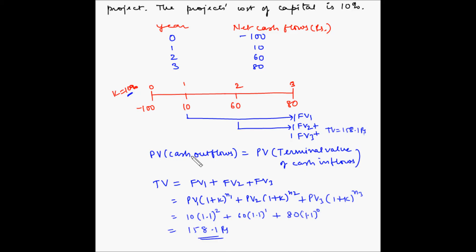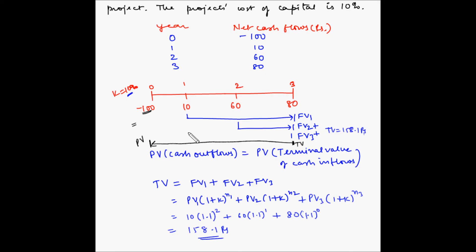We know the present value of cash outflows — there is only one cash outflow and its value is already at present value. We also know the terminal value of the cash inflows, which is 158.1. This terminal value has to be brought to its present value, and this present value of cash outflows will equal the present value of this terminal value of cash inflows at the MIRR. In other words, the rate at which the present value of cash outflows equals the present value of the terminal value of cash inflows is the MIRR.